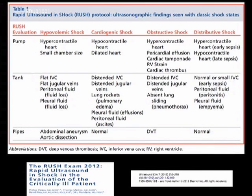Now let's skip down to Part 3, Evaluation of the Pipes, which will really be the main focus of this sequence. Under hypovolemic shock, we're going to assess both the thoracic and abdominal aorta for pathology, specifically dissection or aneurysm with rupture. Under obstructive shock, if we do see right ventricular thrombus or right ventricular strain, we may want to switch probes and look for the presence of a deep venous thrombosis to corroborate obstructive shock as the etiology for the patient's condition.